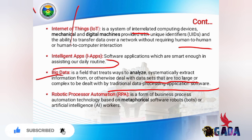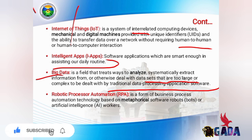Robotic process automation, or RPA, is a form of business process automation technology based on metaphorical software robots, or bots, or artificial intelligence workers.